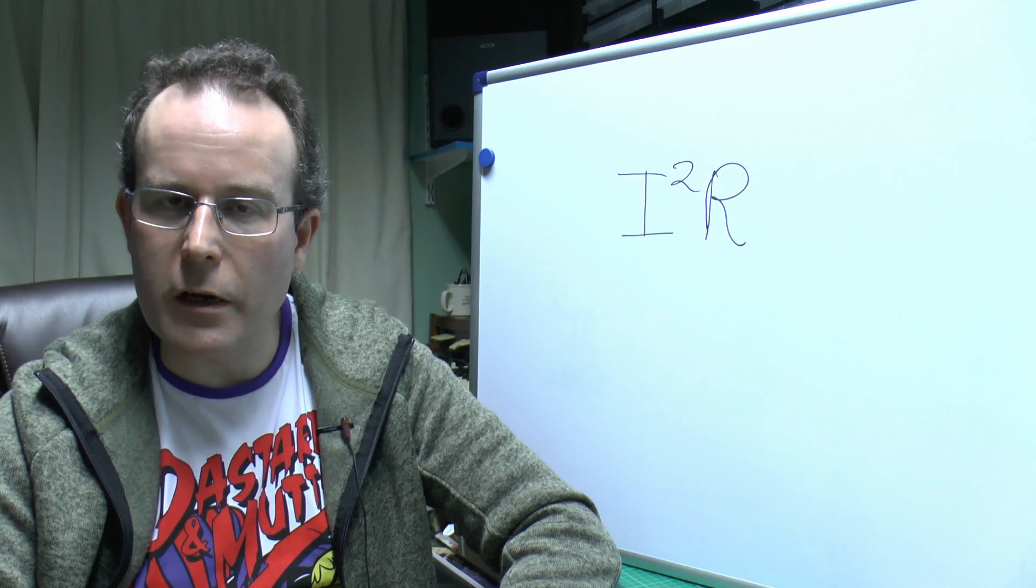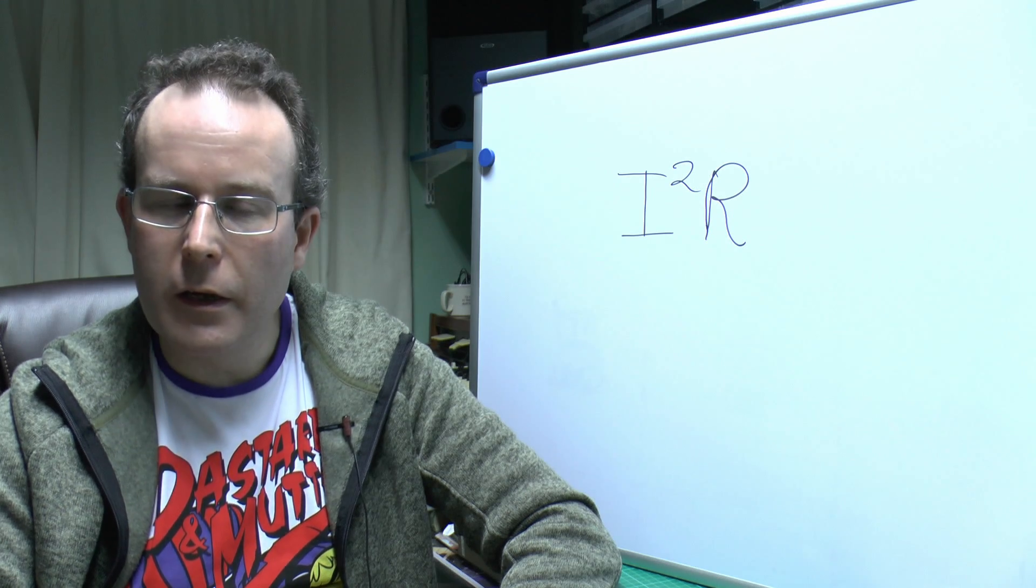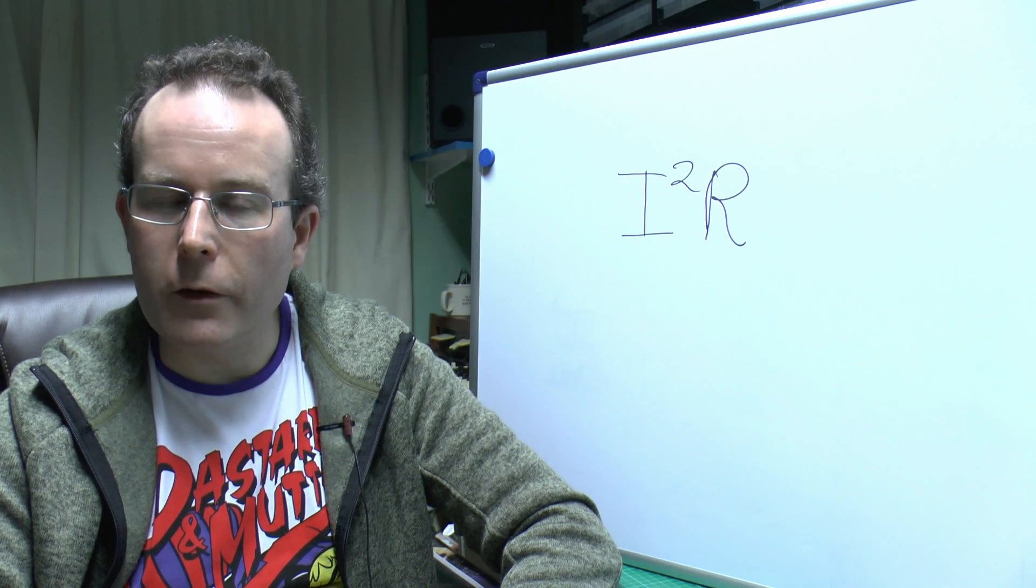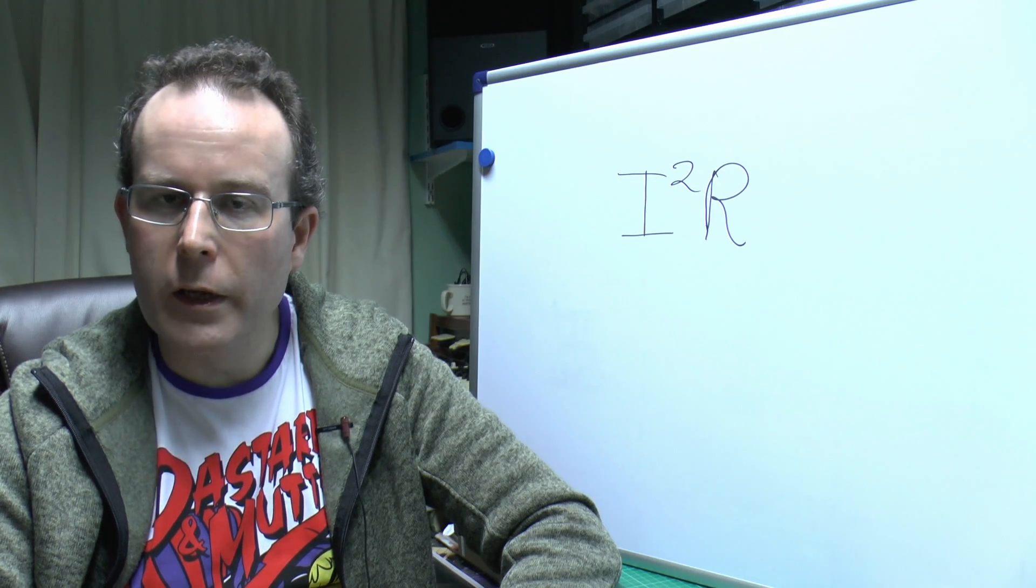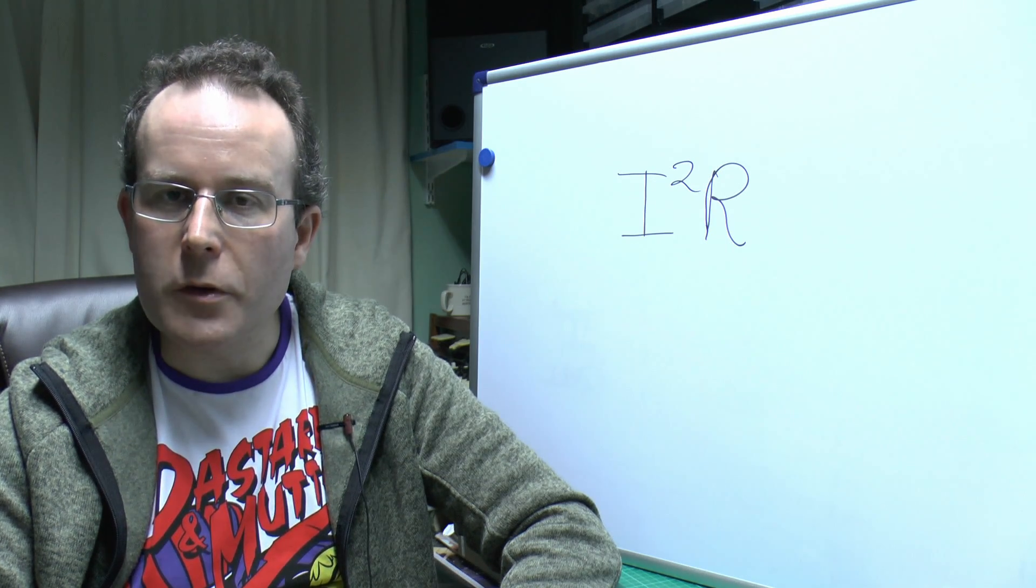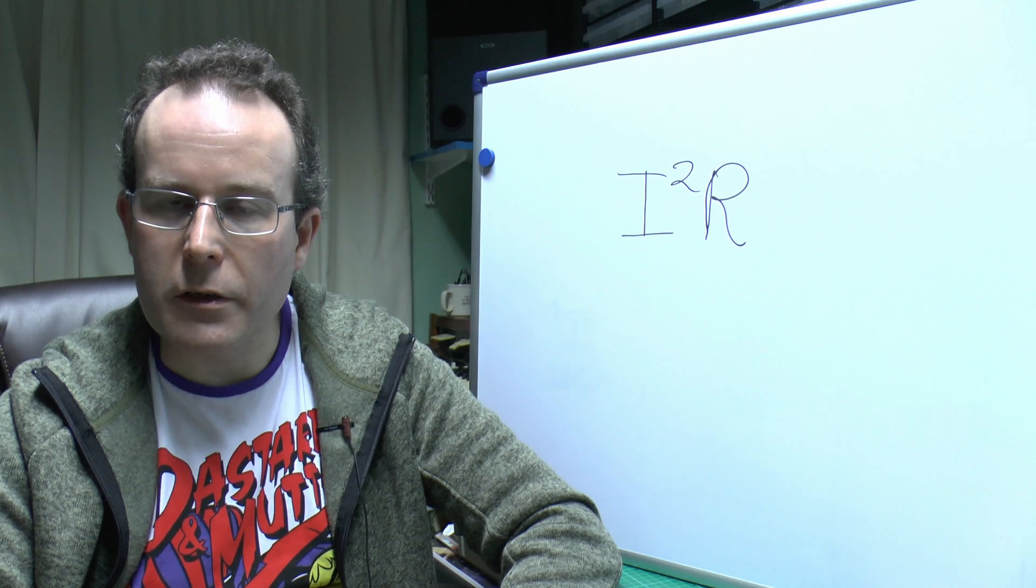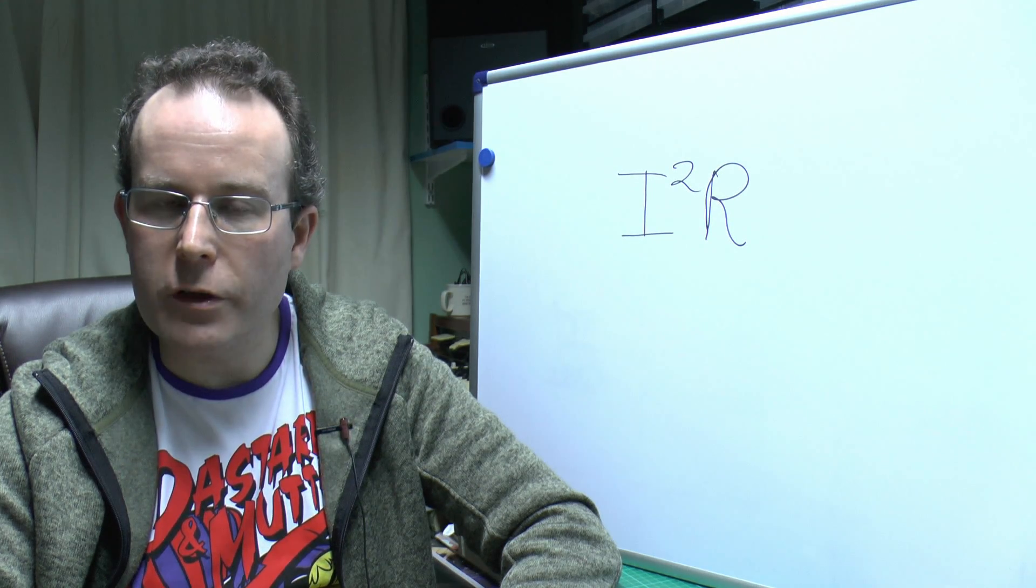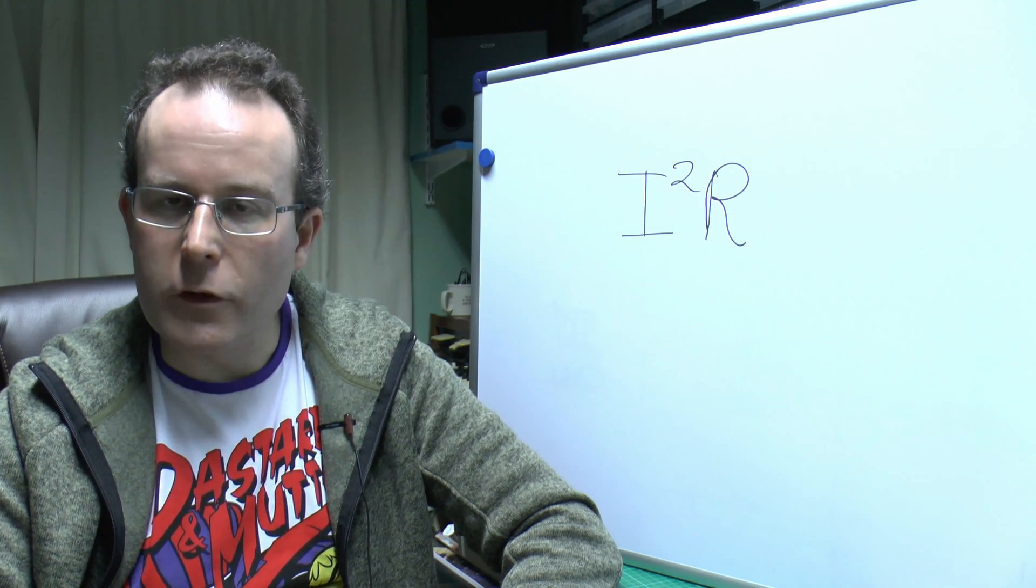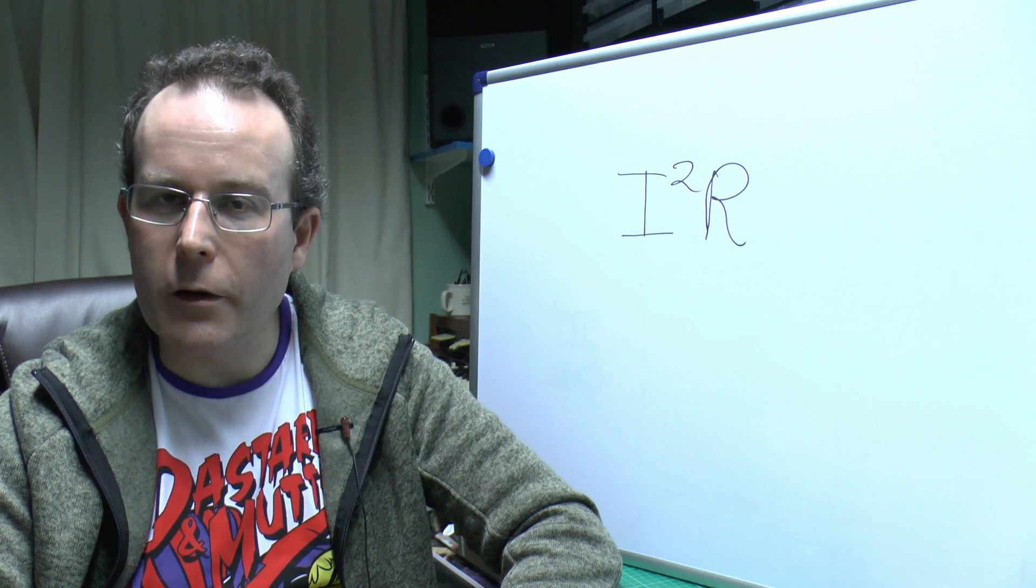Which is I squared R, which is basically current squared multiplied by the resistance of the device or the fuse in this case. So as you see it doesn't actually involve voltage at all, it's clearly independent of that. It's purely the current and the resistance, and of course the current is entirely dependent on the voltage across the fuse.